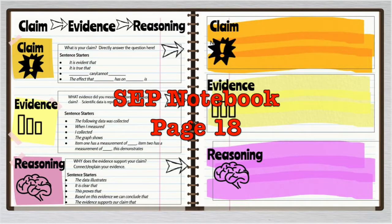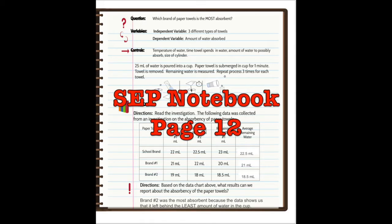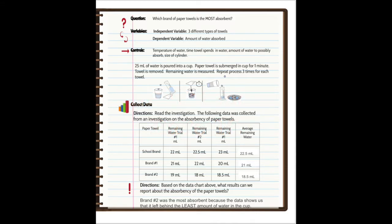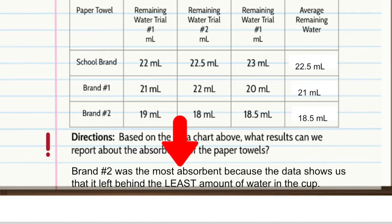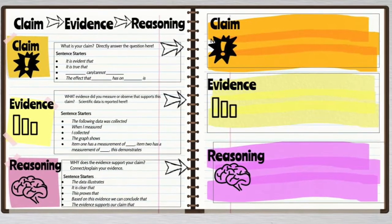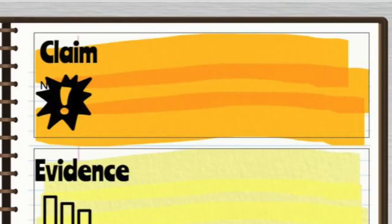Today we're going to be looking at this page of our interactive notebook as we write a Claim Evidence Reasoning Report. We're going to base this report on the investigation we conducted using paper towels. You might remember our investigation started with the question, which brand of paper towels is the most absorbent? We then collected data and made our discovery that brand 2 was the most absorbent. In our CER report, we start with that discovery. It becomes our claim.